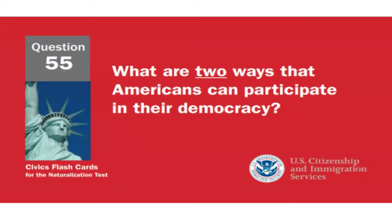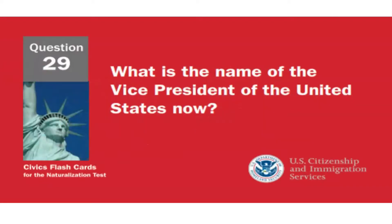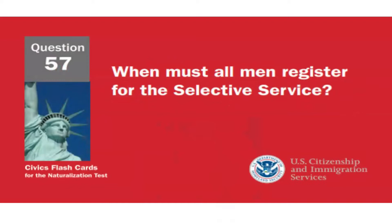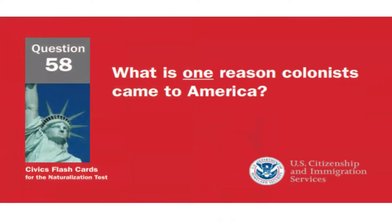Why does the flag have 13 stripes? Because there were 13 original colonies. What are two ways that Americans can participate in their democracy? Vote and join a political party. What is the name of the vice president of the United States now? Kamala Harris. When must all men register for the Selective Service? At age 18.